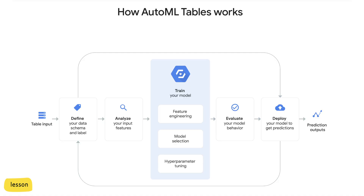This lesson is entirely optional because it's using Google's AutoML Tables, which is a paid service. The good news is that when you first sign up for the service, you get $300 worth of free credits, which is a really cool way to try out the product. However, please be careful and keep an eye on your credit balance, because once you run out of free credits, you will be charged for usage.